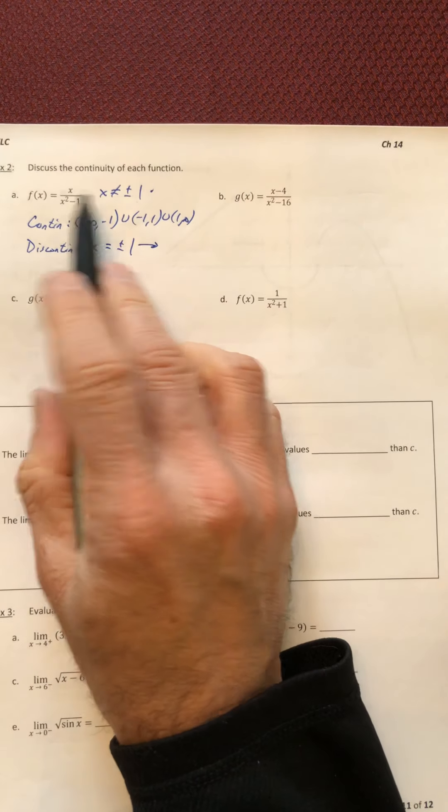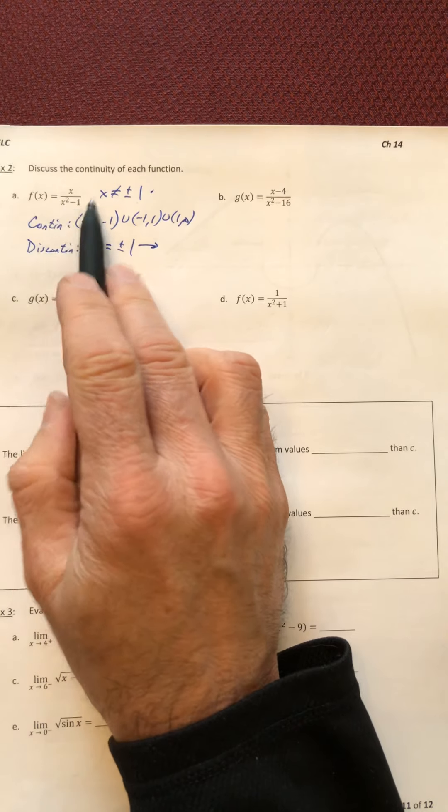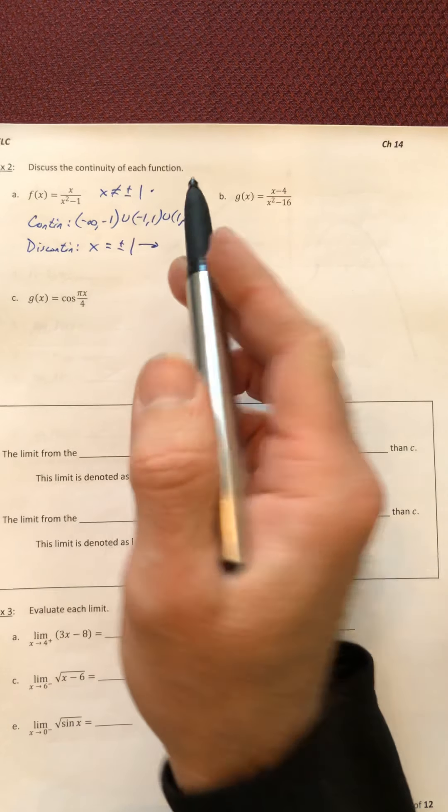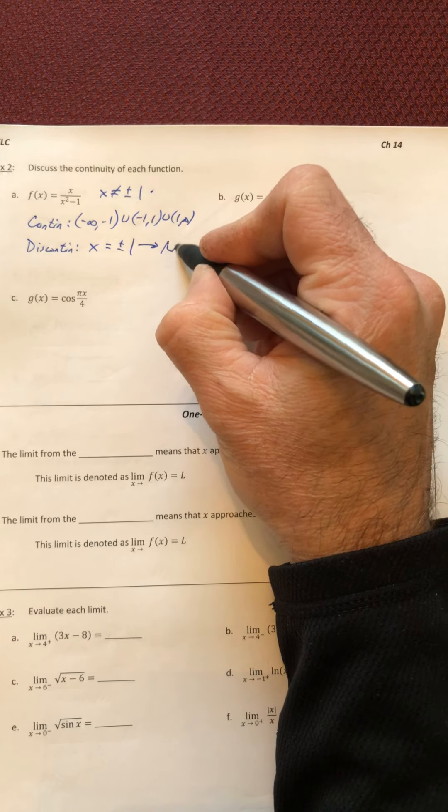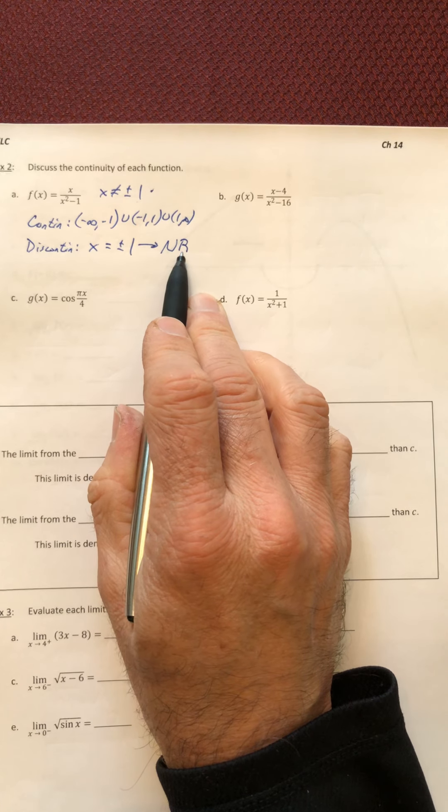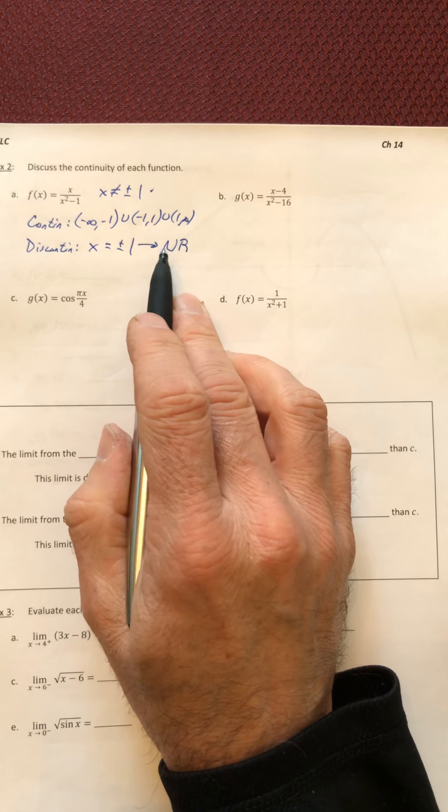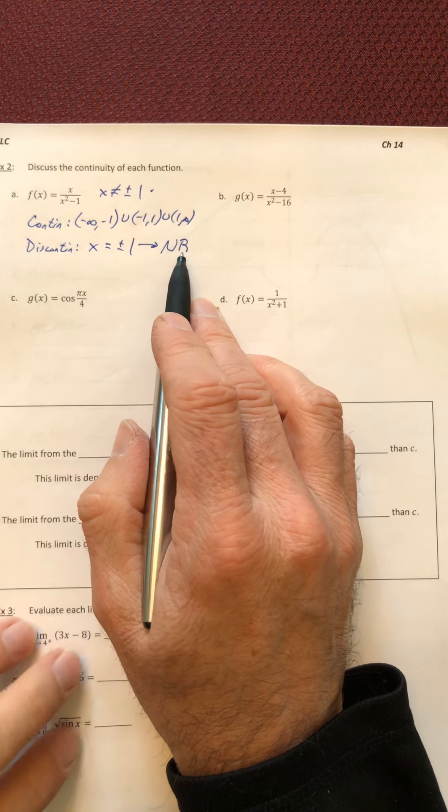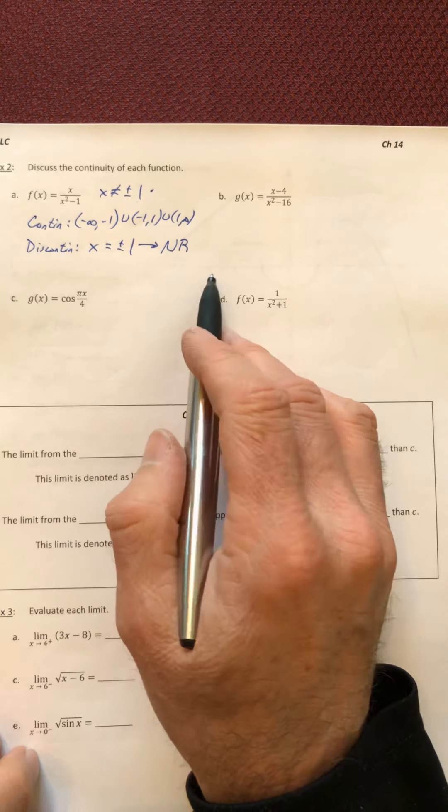So this is a domain notation. This is the discontinuity notation. And as we said earlier, you can't do anything to this function to make these two values kind of disappear. So you can't remove them. So that would be a non-removable discontinuity. So you can just label it as an NR for non-removable or just R for removable.